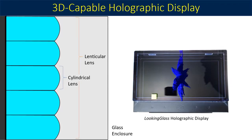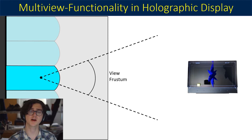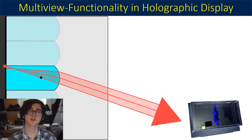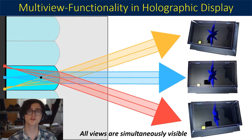Holographic displays, like the Looking Glass shown on the right, are a promising solution. Their effect relies on light refraction through a lenticular lens, which is the array of cylindrical lenses as shown on the left. To examine this effect, we'll look at a single cylindrical lens. Cylindrical lenses have a view frustum that defines the angle range they operate in. For 3D visualization, a narrower view frustum is ideal, as it compresses the projected views. A pixel aligned to the center of the lens will project its light along the lens as normal. A pixel to the side of the lens will instead project its light at an angle — the left extreme pixel directs light at an angle half the view frustum to the side, and similarly the right extreme pixel directs light toward the opposite angle. All pixels are simultaneously projecting their light, meaning all of their views are simultaneously visible.